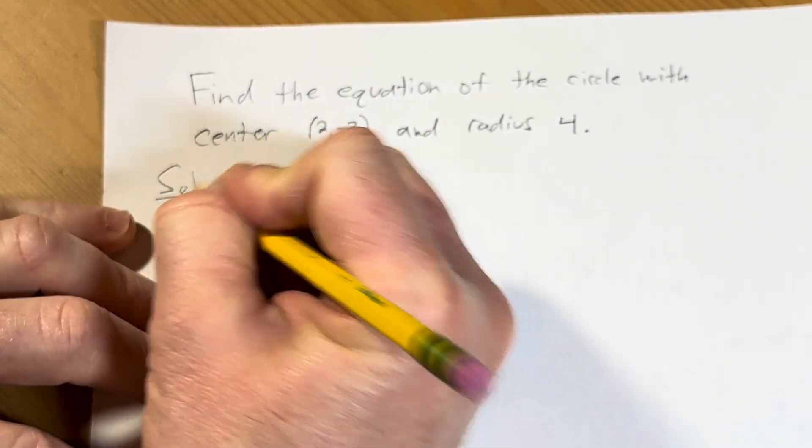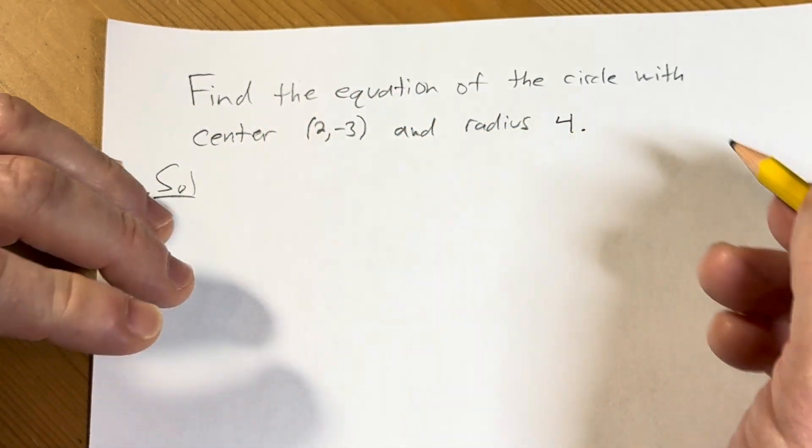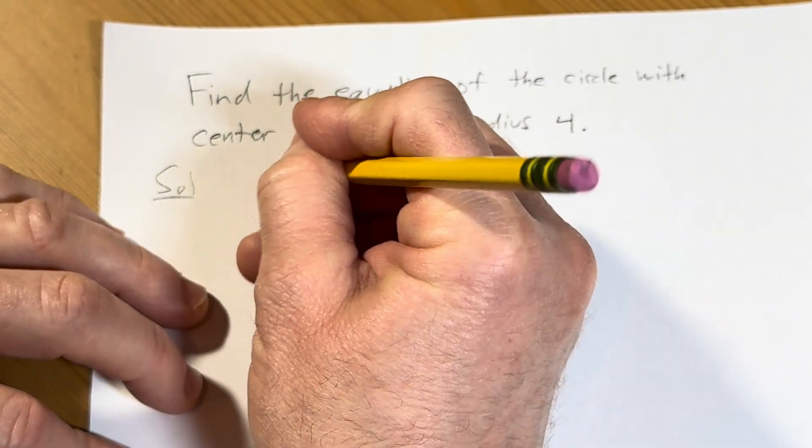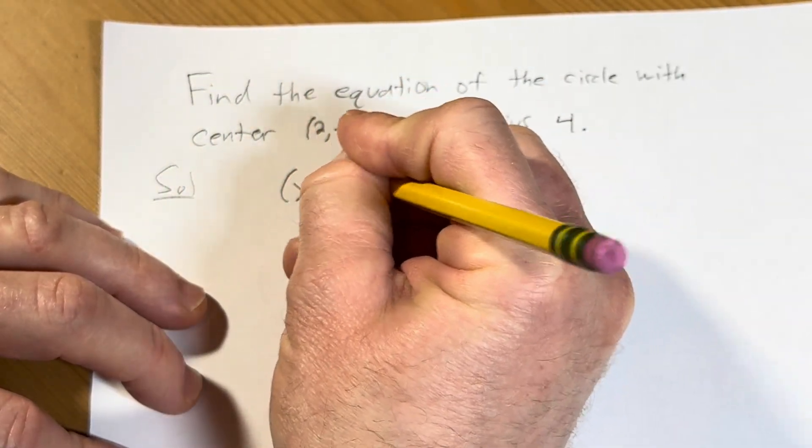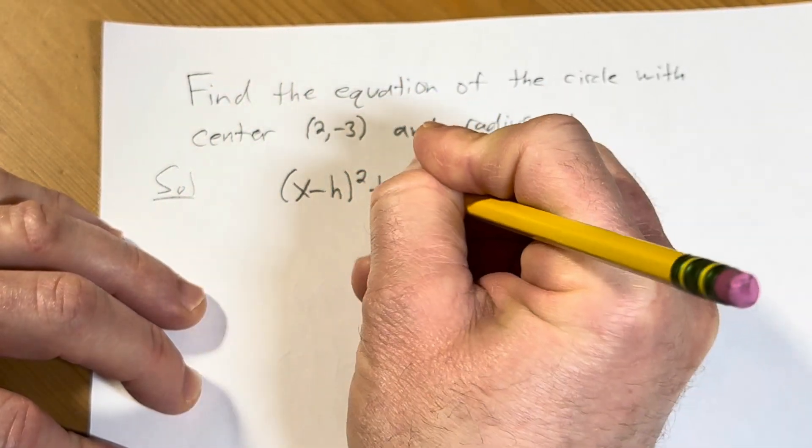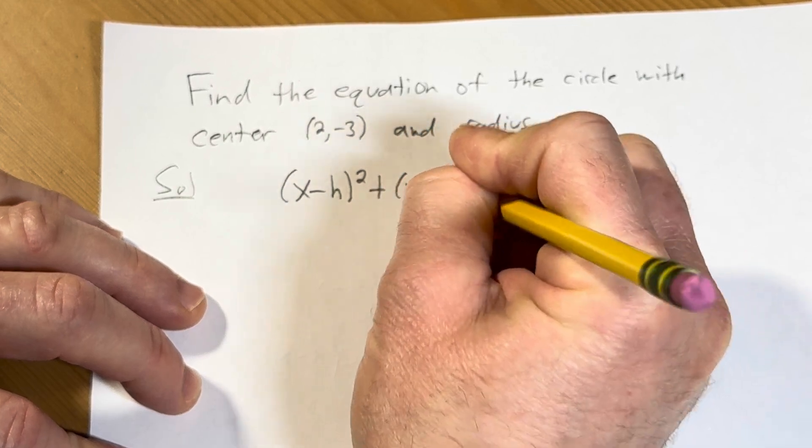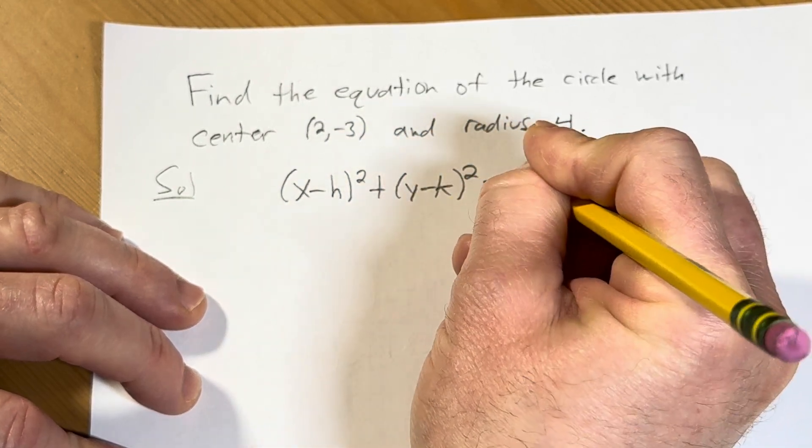Solution. The formula is very important. Once you know the formula you can do this problem. The formula is (x - h)² + (y - k)² = r².